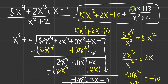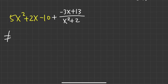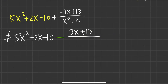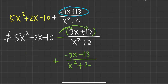In this case, do not put a negative sign in front of the remainder fraction. Otherwise it looks like you need to distribute the negative. For example, if you wrote minus and then 3x plus 13 over x squared plus 2, there is an invisible parenthesis and you would distribute the negative, getting negative 3x minus 13 — but you really want positive 13. So make sure you just write it as plus the remainder over the denominator. Keep it simple.